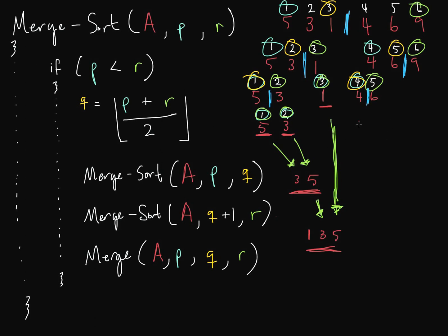P is 4, R is 5. Since 4 is less than 5, Q is floor of (4+5)/2 = 4. We divide: element 4 at index 4 is both P and R, so it's sorted. We then call merge sort on the right: element 6 at index 5, which is also P and R, so it's sorted too. Now we merge: is 4 less than 6? Yes, so 4 comes down. Nothing remains on the left, so 6 comes down. Sorted: 4, 6.